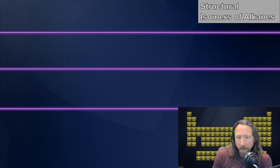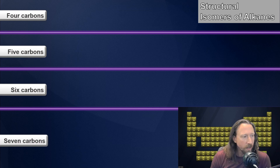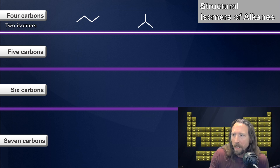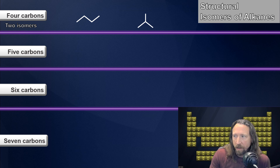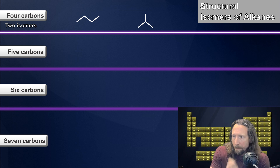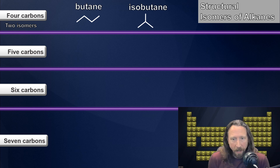By now you've probably become familiar with structural isomerism — the idea that compounds can have the same molecular formula but different arrangements of atoms in space. Simple examples from organic chemistry include saturated hydrocarbons. With four carbons, there are only two isomers possible: the normal or straight-chain alkane, where all four carbons are in one continuous chain, and the branched version. Chemists commonly refer to these by their common names: butane and isobutane.